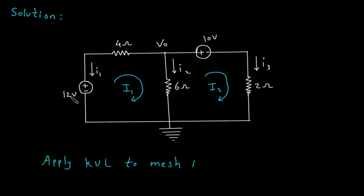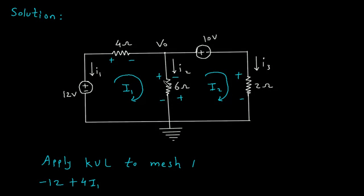Starting from here and assigning plus and minus signs according to I1 and I2: minus 12, then plus 4I1, plus 4I1, plus 6I1 minus I2, is equal to 0.